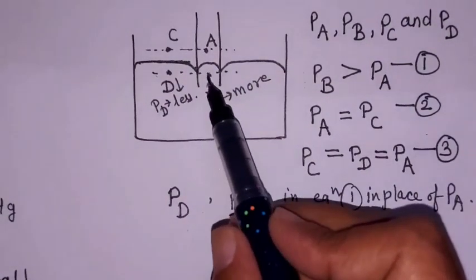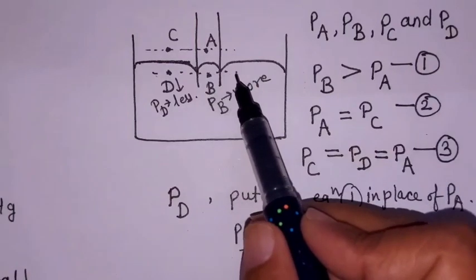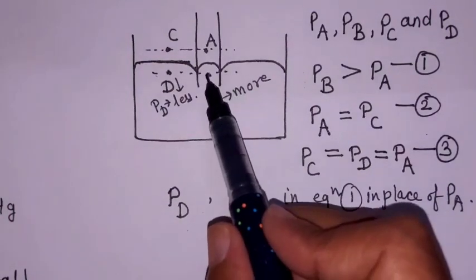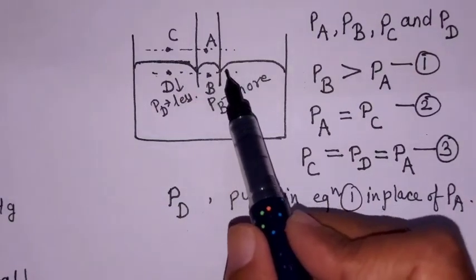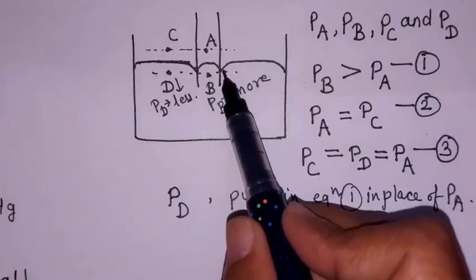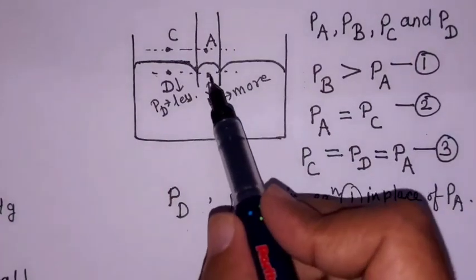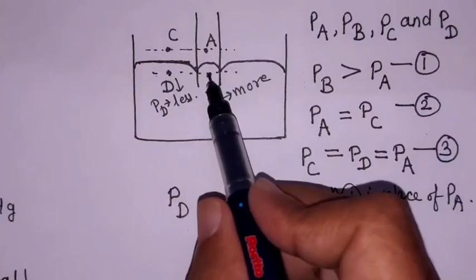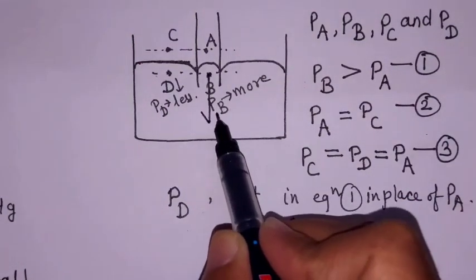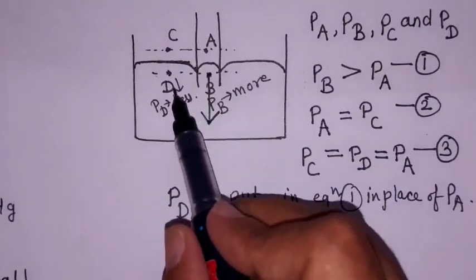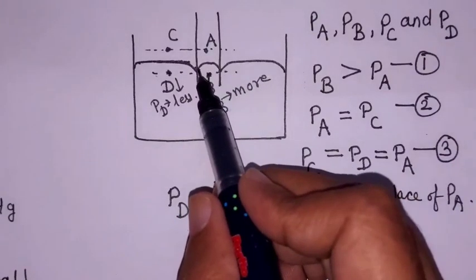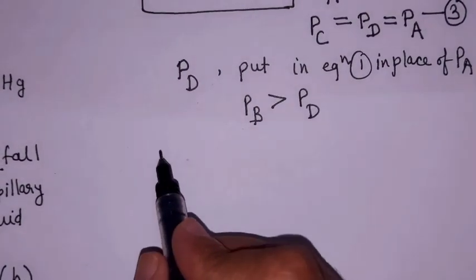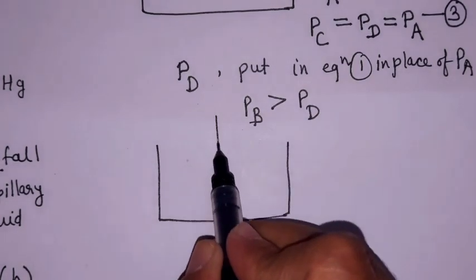Since the liquid always tries to establish equilibrium, it will flow from high pressure to low pressure. In order to maintain the same pressure at both points, the mercury in the capillary tube rushes out of the capillary. Point B wants to set up equilibrium with point D, so if mercury falls to that level, it can gain the same pressure as D.